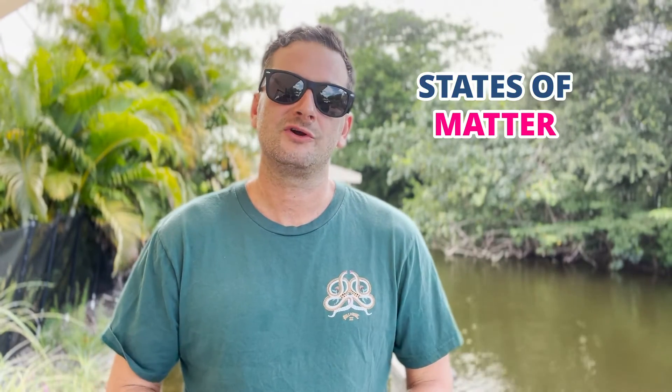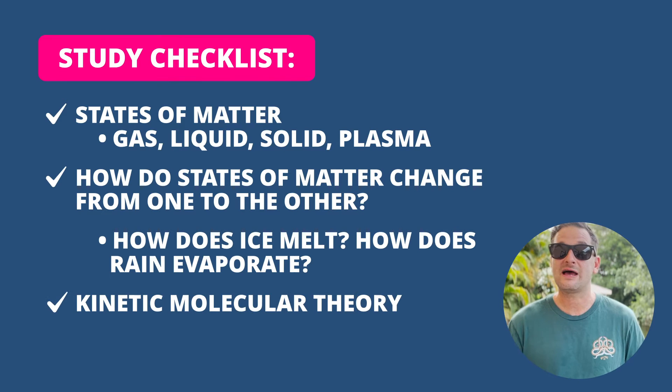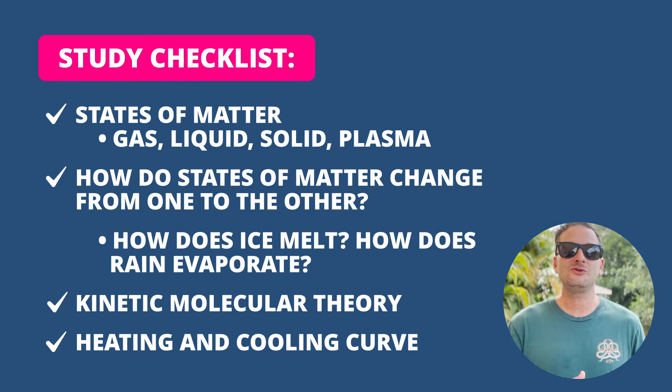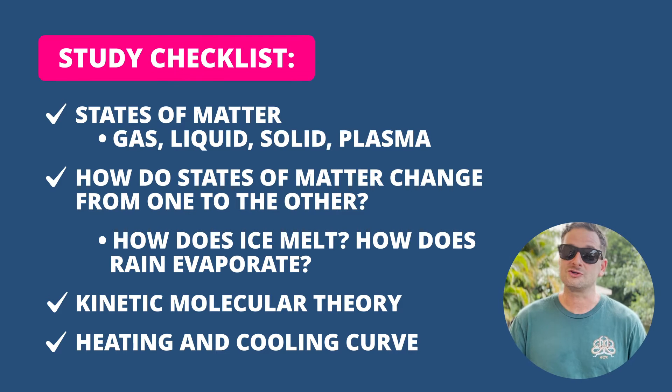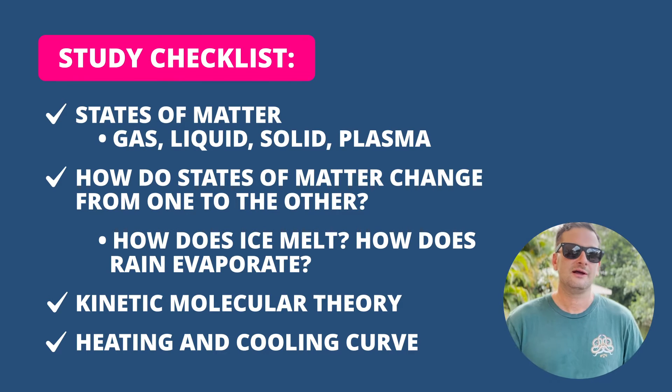The next topic is states of matter. There are four states: solid, liquid, gas, and plasma. Know how matter changes from state to state — for example, a liquid can become a solid like water to ice. You should review the kinetic molecular theory, which explains how gases behave based on the idea that they are made up of tiny particles and molecules that are always moving. Also know heating and cooling curves — what happens when heat is added or released.